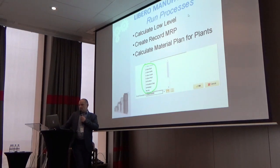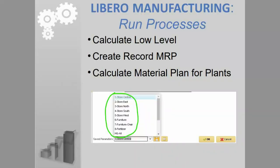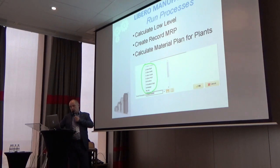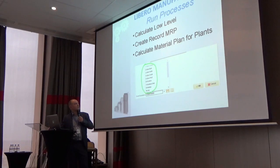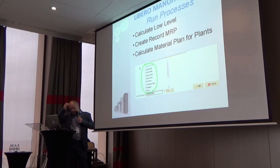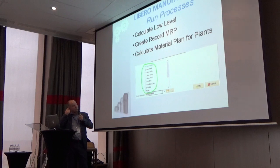The next process is Create Record MRP. This process recreates the demand, approved and open orders for a product. Generally, this process is only performed during the implementation of MRP when it starts. The next process is Calculate Material Plan — this process calculates the demand, approved and open orders for a product. You must run this process manually for each organization where you need the MRP option, or you can add these processes to the scheduler and they will run automatically.